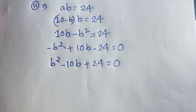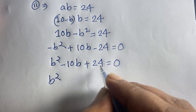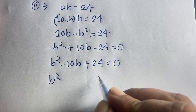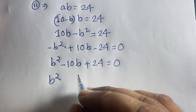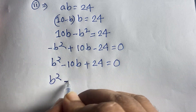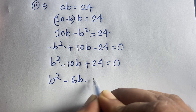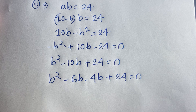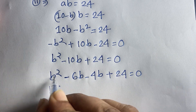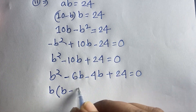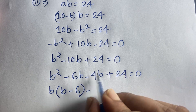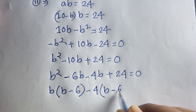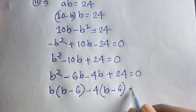Now I will use middle-term factoring. We have b squared, 24, and 10b. Since 4 times 6 is 24 and 4 plus 6 is 10, we split the middle term: b squared minus 6b minus 4b plus 24 is equal to 0. Now b is common in the first two terms, giving b(b minus 6), and 4 is common in the last two terms.